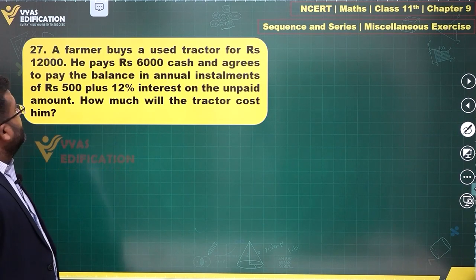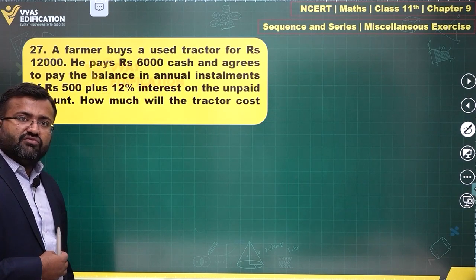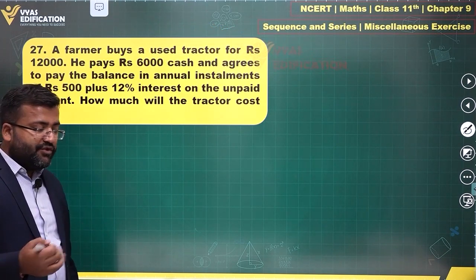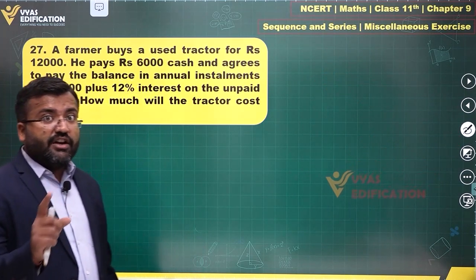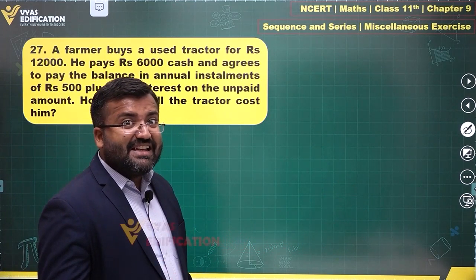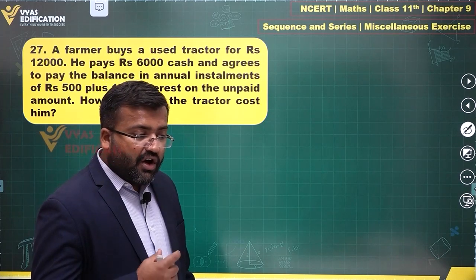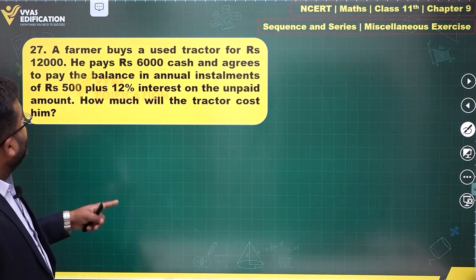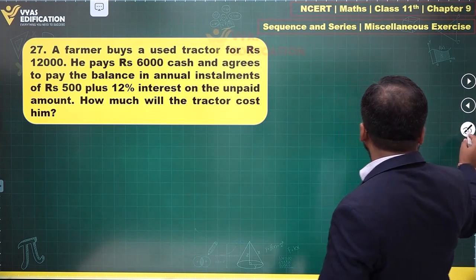From the remaining 6,000, some interest would have accumulated. He pays 500 out of that 6,000 plus the additional interest accumulated on it. At the end of the next year, he pays 500 plus additional interest on the remaining amount, which is 5,500 because he has already paid 500. These are annual installments, not monthly.